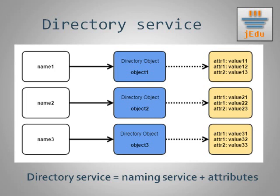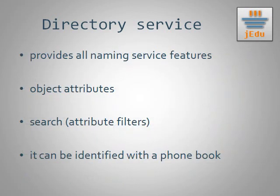Directory service also provides one important feature strictly related to attributes: because objects now have more than just a name, you may look up objects by their attributes — in short, it provides search functionality. With attributes and searching, you can think of directory service as a phone book. Each phone number is bound to a person directory object with attributes such as first name, last name, address, or company name. In this book you can find all persons with, for example, a last name starting with the letter A, or living on a specific street. In JNDI there are a few attribute filters and logical operations you can apply while searching, which we will discuss in more detail in future videos.